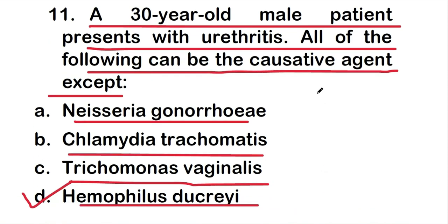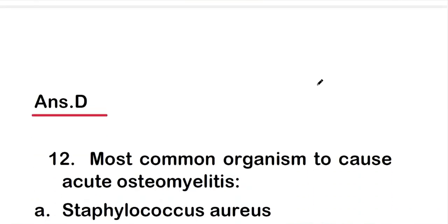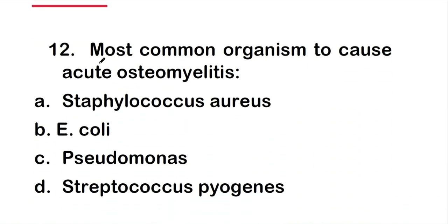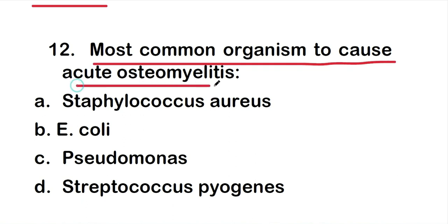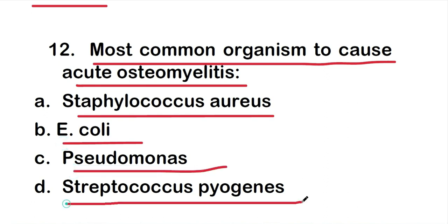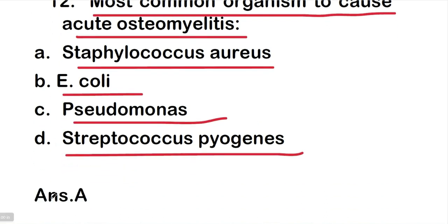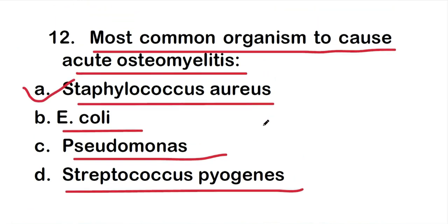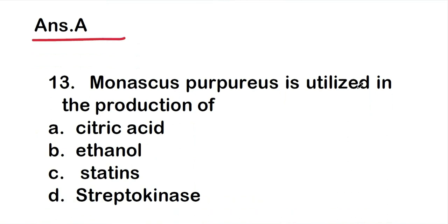Question 12: What is the most common organism to cause acute osteomyelitis? The options are Staphylococcus aureus, E. coli, Pseudomonas, or Streptococcus pyogenes. The right answer is option A: Staphylococcus aureus. Staphylococcus aureus is the most common organism to cause acute osteomyelitis.